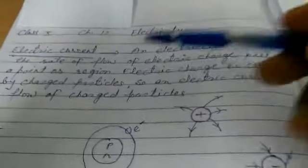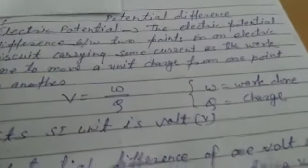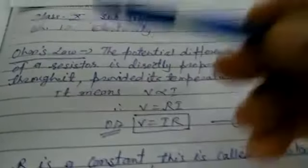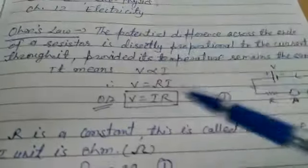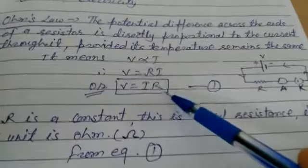What have you read? We have learned about electric current, electric potential and potential difference, Ohm's law so we get formula V equal to IR.